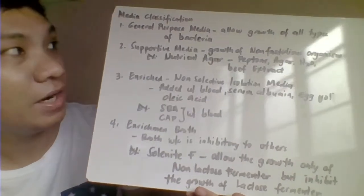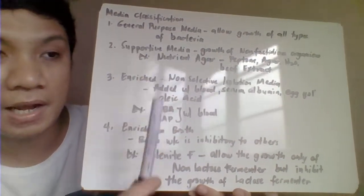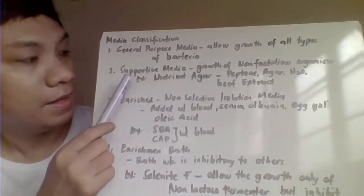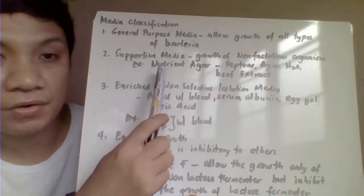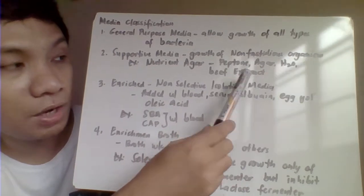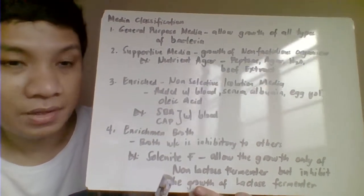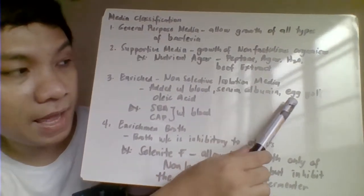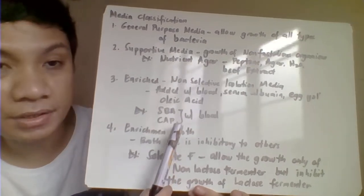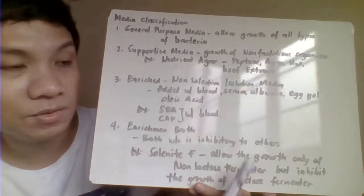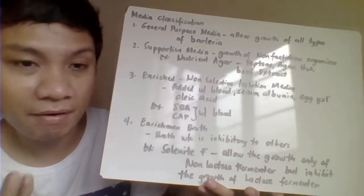The first classification of culture media is general purpose media, which allows the growth of all types of organisms. Supportive media allows growth of non-fastidious organisms — for example, nutrient agar, which contains peptone, agar, water, and beef extract. Enriched culture media contains growth enhancers like blood, serum, albumin, or egg yolk — examples include sheep blood agar and chocolate agar plate, which are non-selective isolation media.